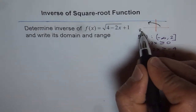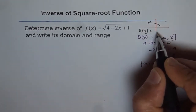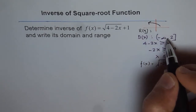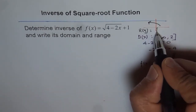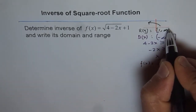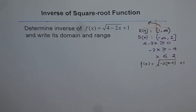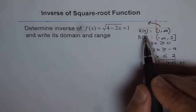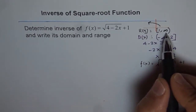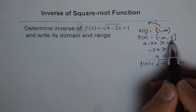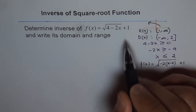From here, we can write the range of the function as y is greater than or equal to 1, or in interval notation, from 1 to infinity. It means y is greater than or equal to 1. We can never include infinity, but 1 is included, and 2 is included in the domain. That's the domain and range for this function.